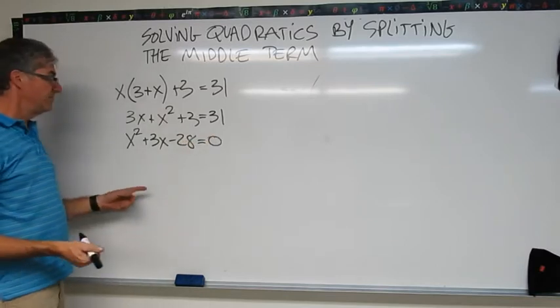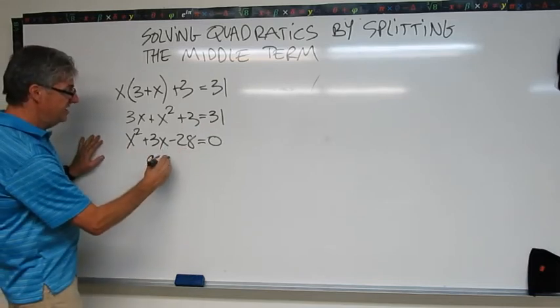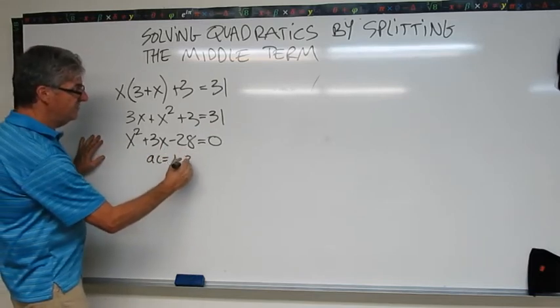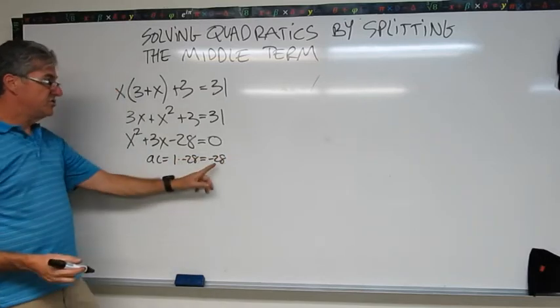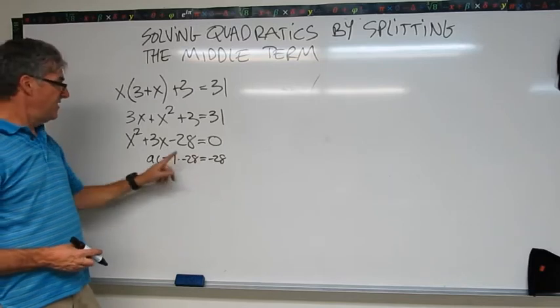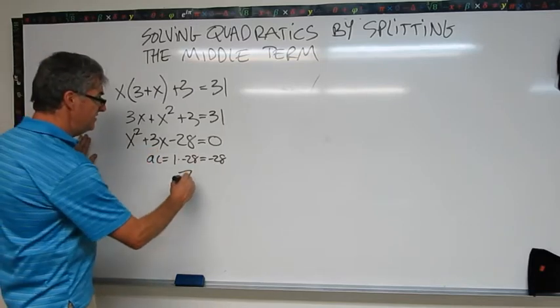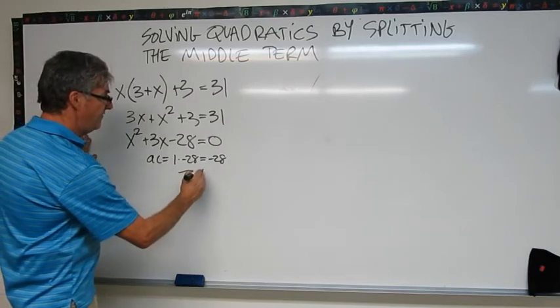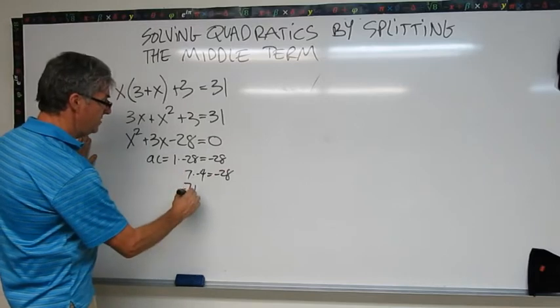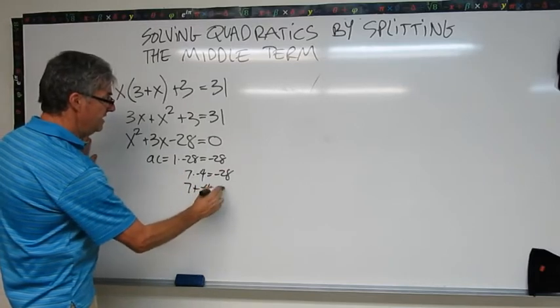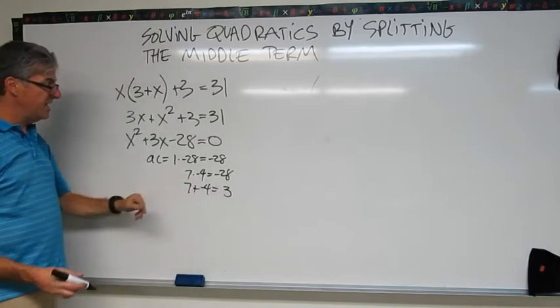Let's split the middle term. A is 1. C is negative 28. So AC equals 1 times negative 28 which is negative 28. Now I need two factors of negative 28 that add up to positive 3. And those are going to be 7 times negative 4 because that's negative 28. That's a 7. And 7 plus negative 4 equals positive 3. So my two factors are 7 and negative 4.